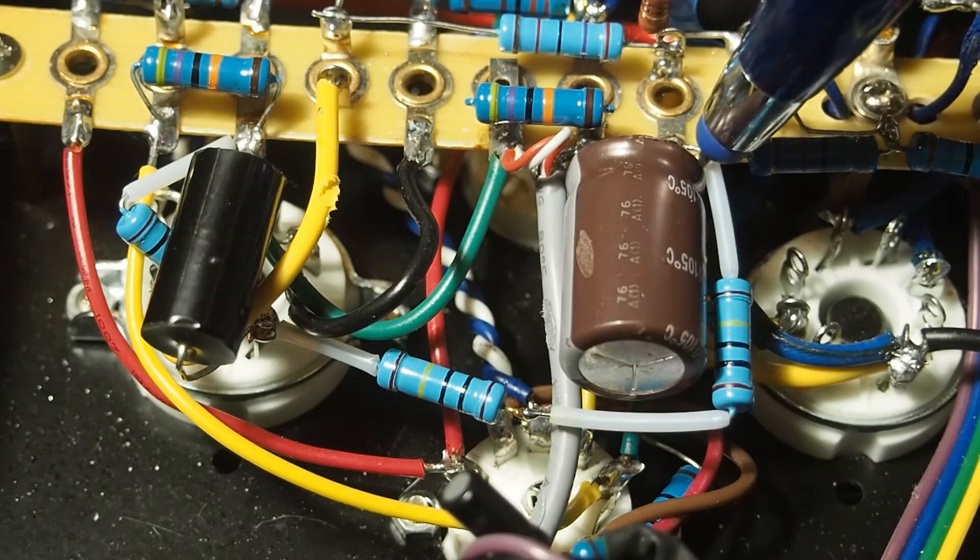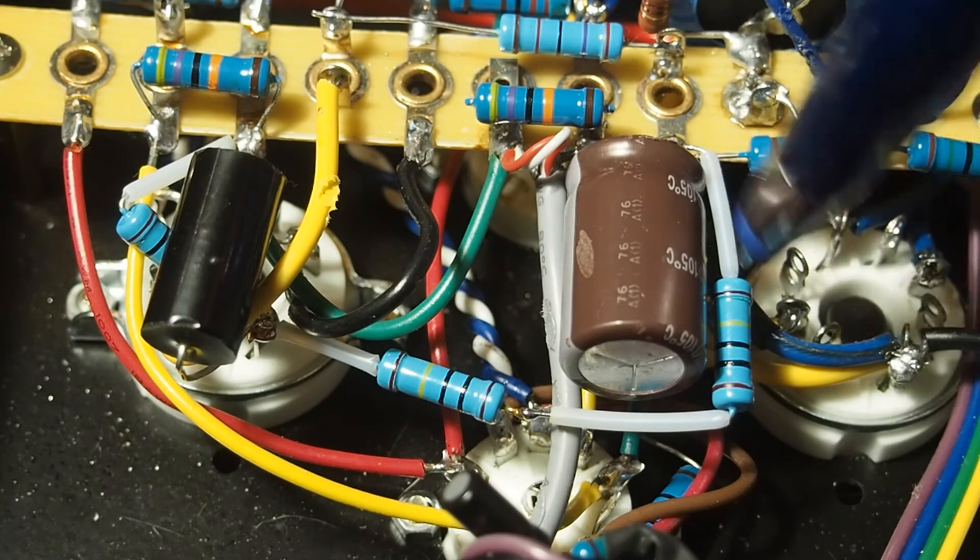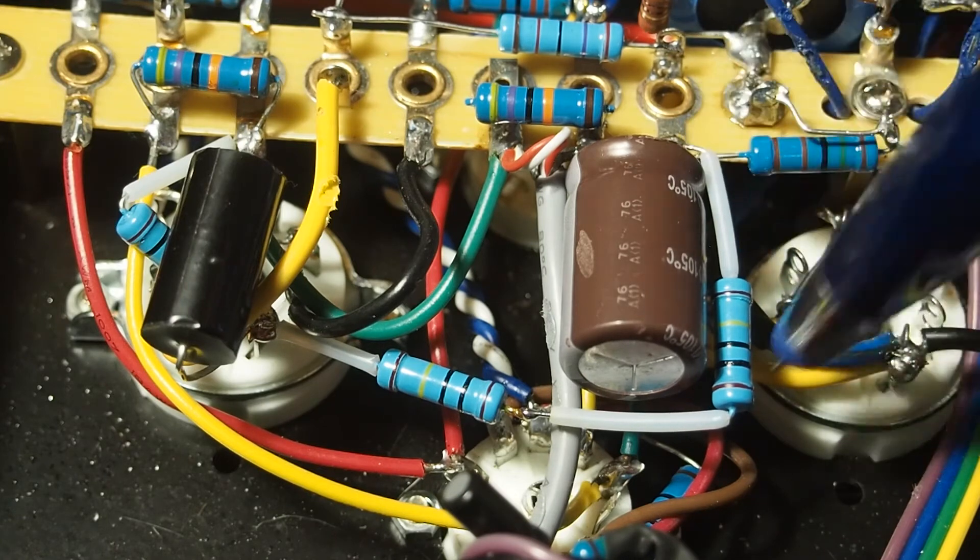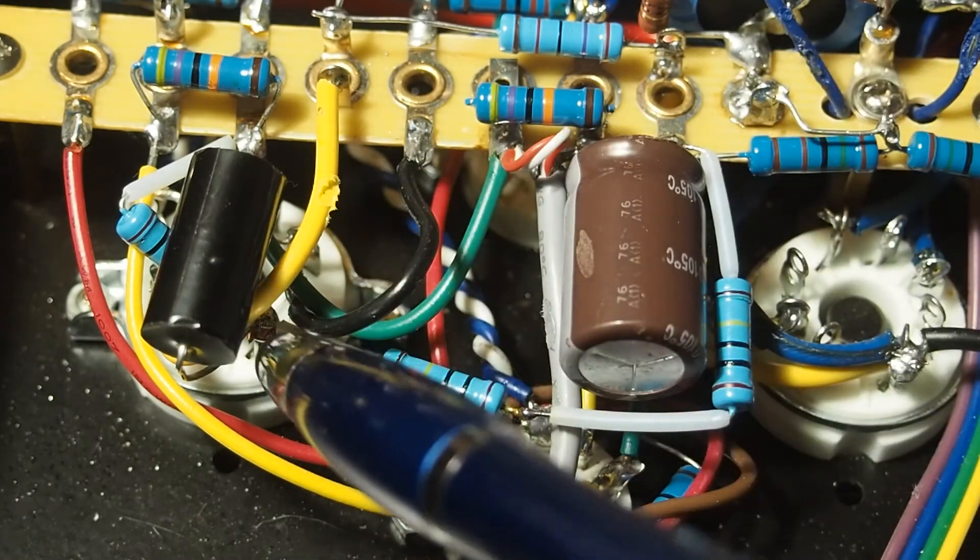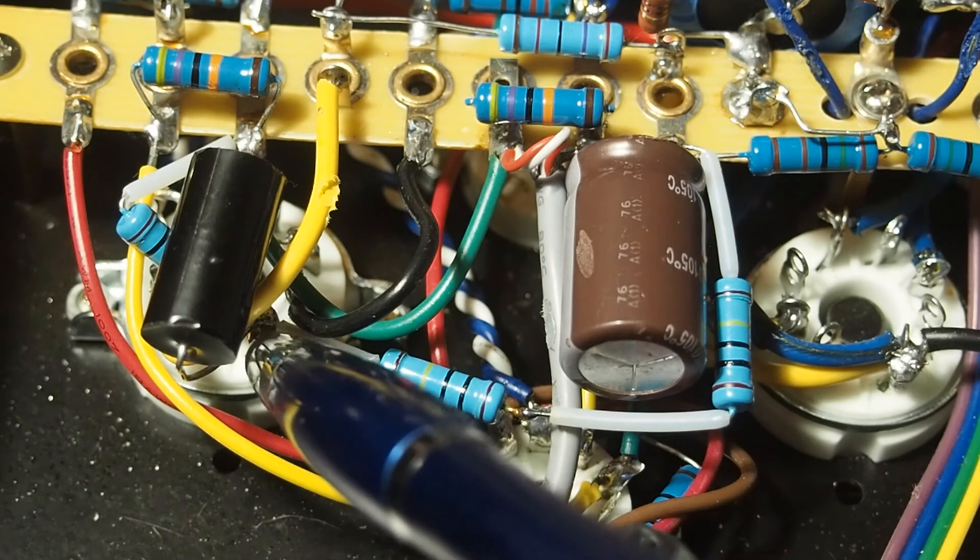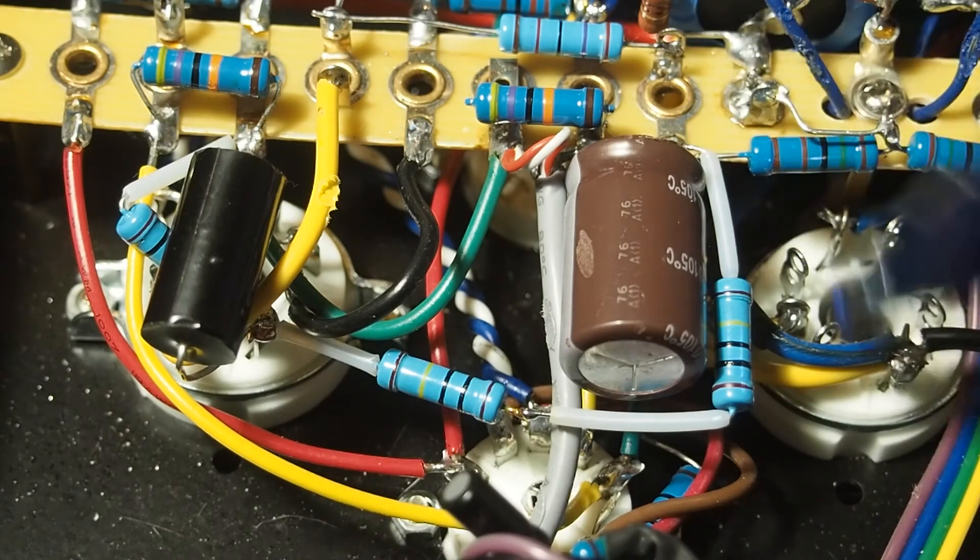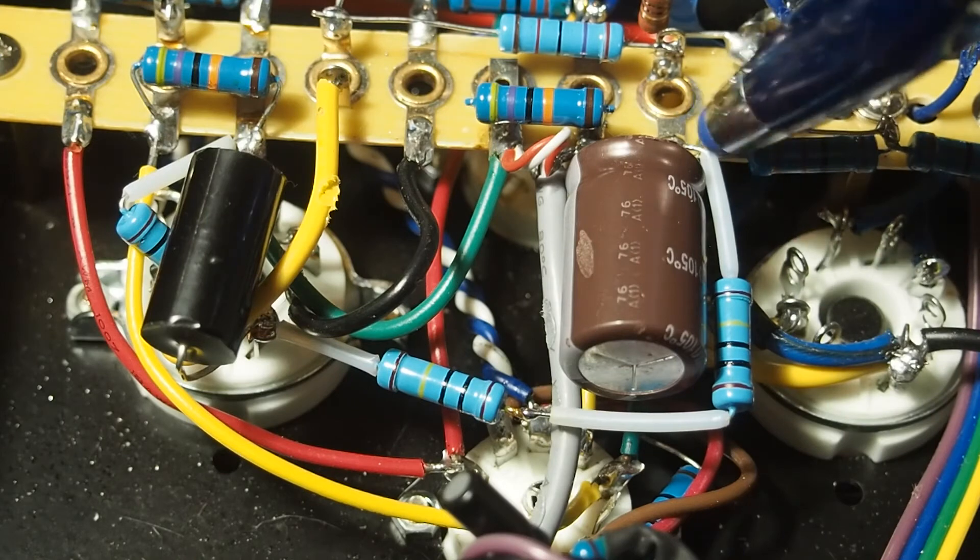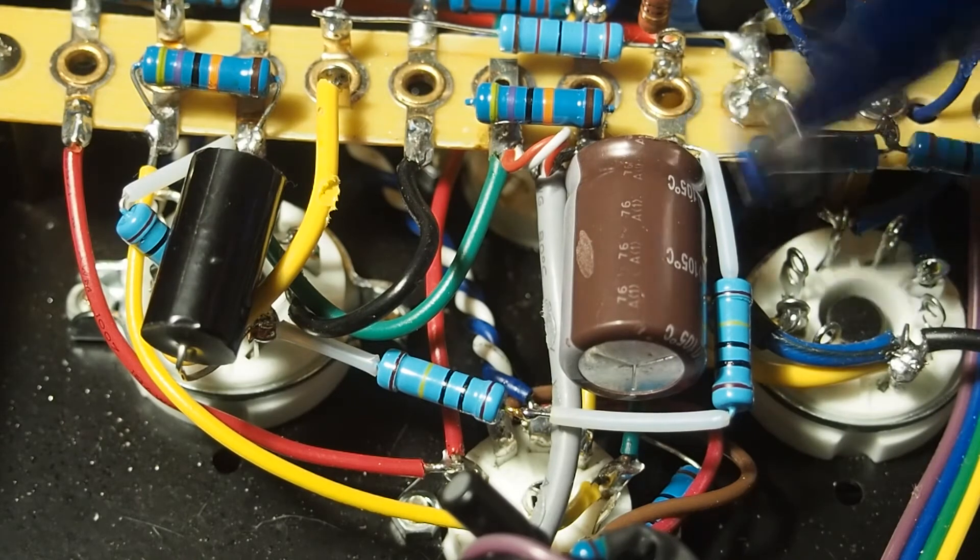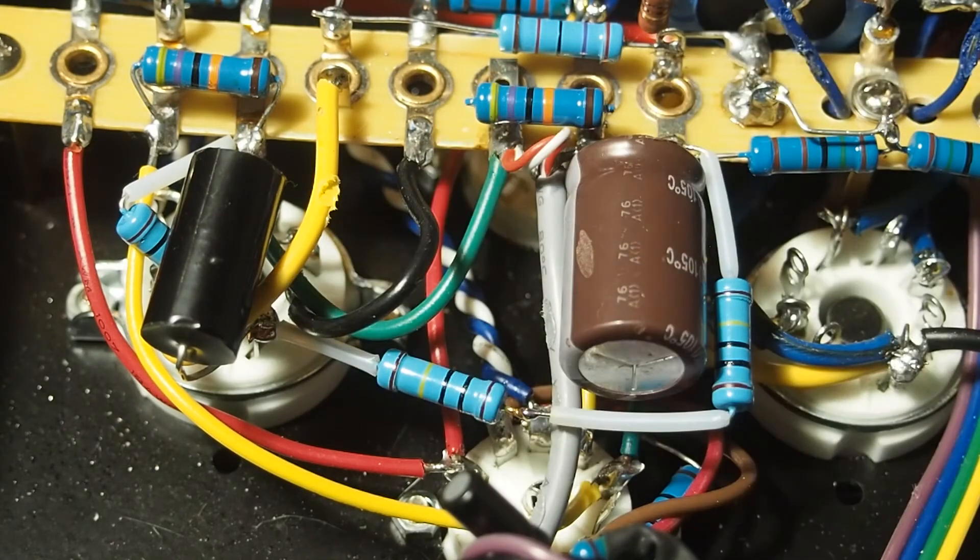And on this side of this cap, you want to run a wire or resistors from here to this pin where this coupling cap connects. So then you have 2 megs of resistance going from the power to the grid, and then you have a 1 meg from the grid to the ground.